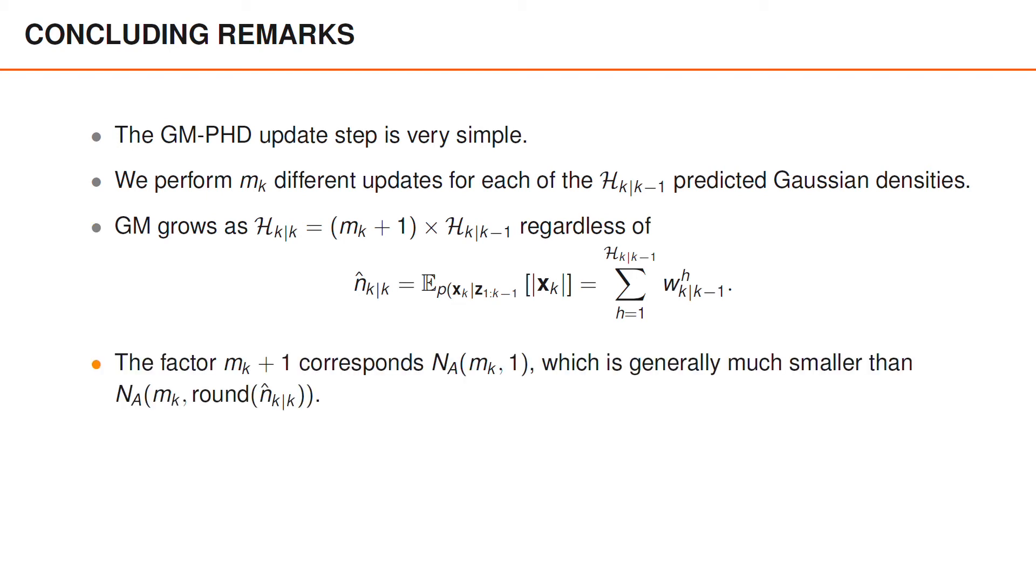For comparison, you may recall the function na that Kal introduced to denote the number of possible associations between m measurements and n objects. As we increase m and n, na grows very quickly. However,